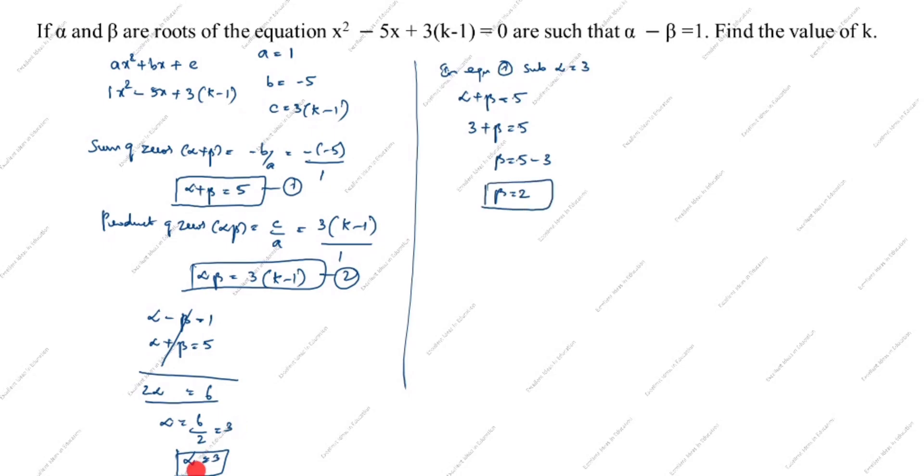Now we got alpha and beta value. So in equation 2 substitute alpha equals 3, beta equals 2. 3 times 2 equals 3(k-1). 6 equals 3k - 3. Bring 3 to this side: 6 plus 3 equals 3k. 9 equals 3k. 9 divided by 3 equals k.